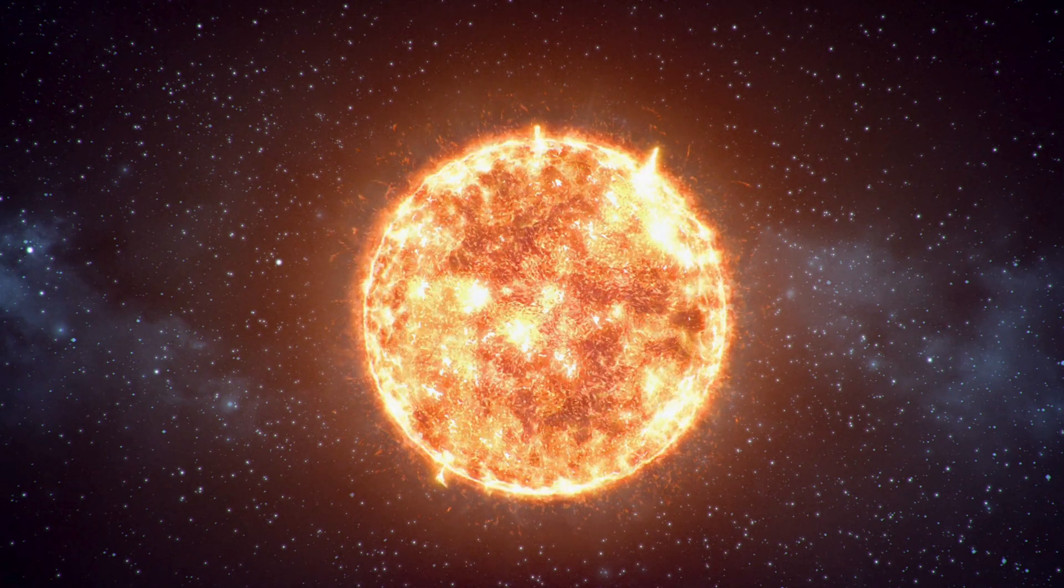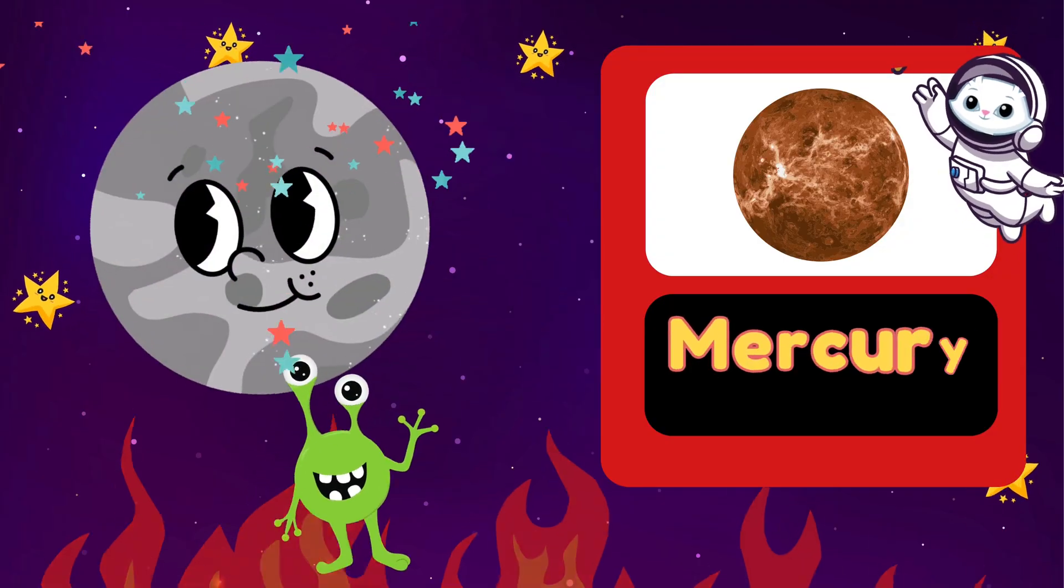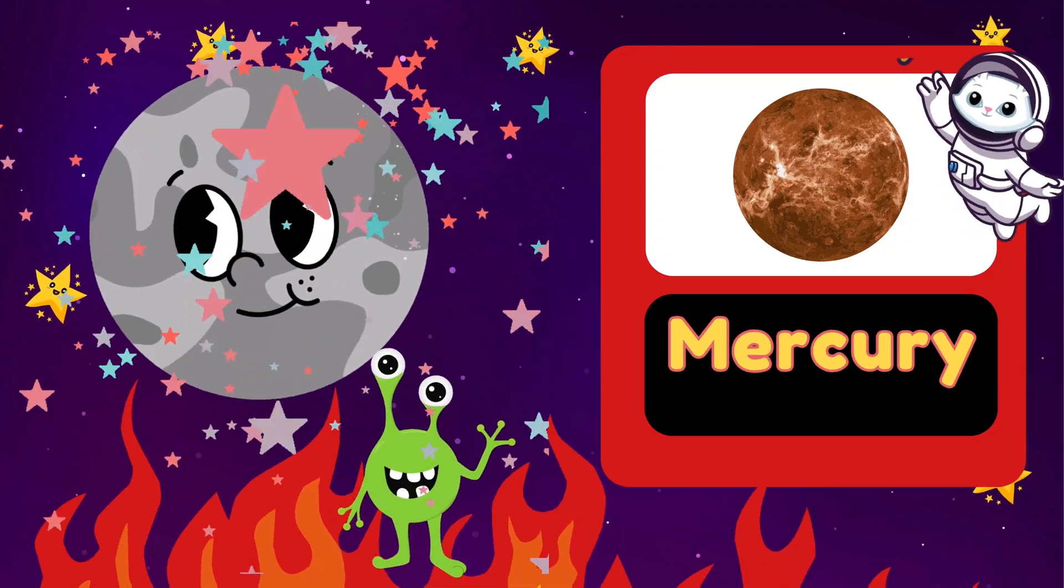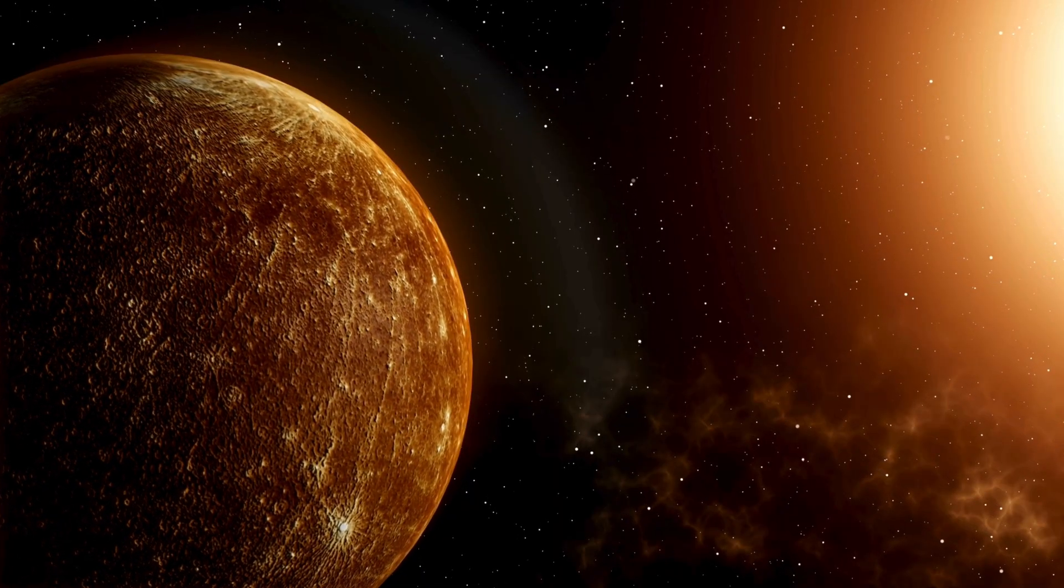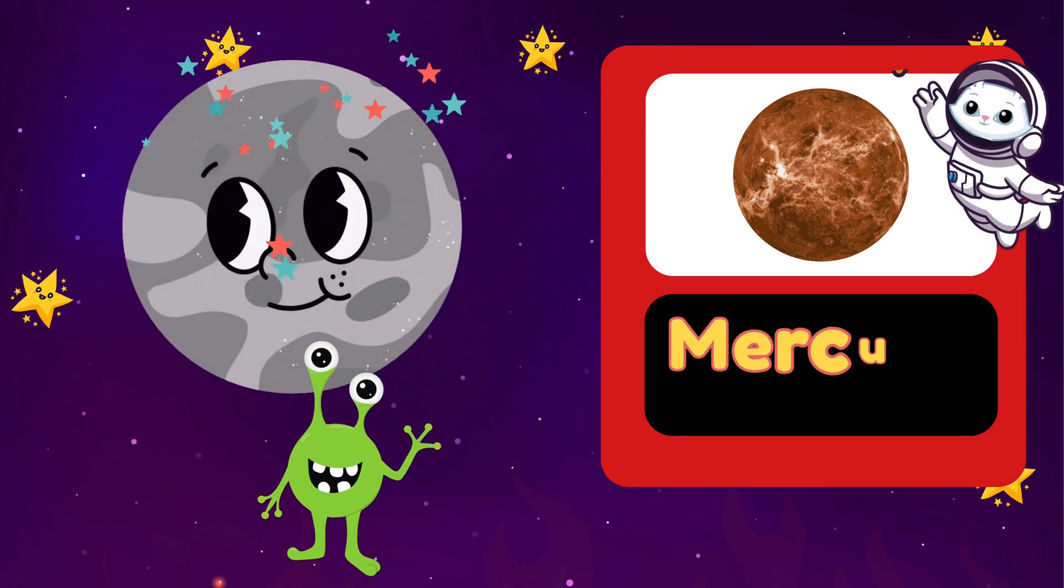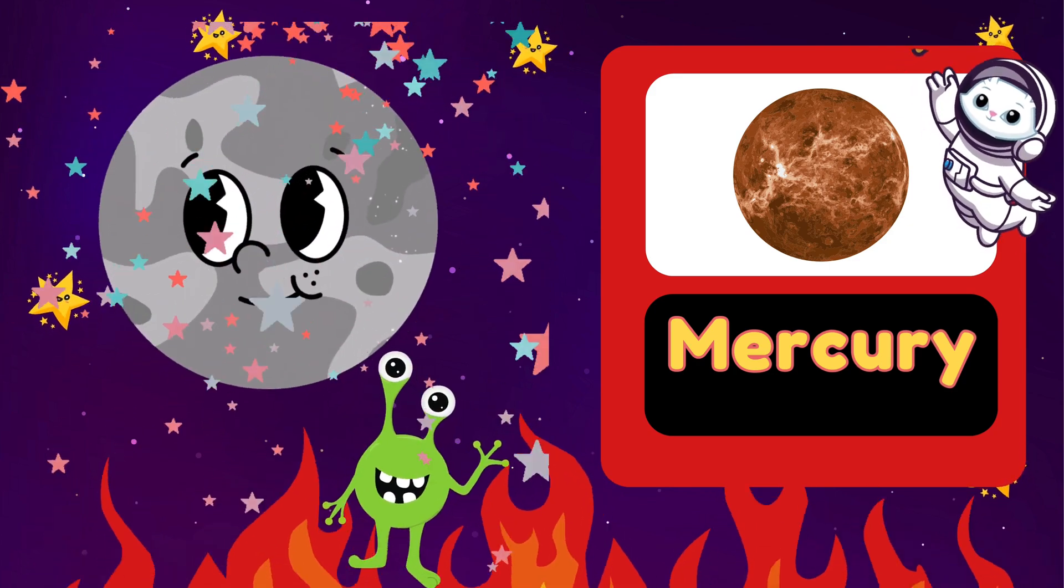Our first planet is Mercury. Can you say Mercury? Great job! Here are three facts about Mercury. Mercury is the closest planet to the Sun. It is the smallest planet in our solar system. Mercury has no moons or rings.